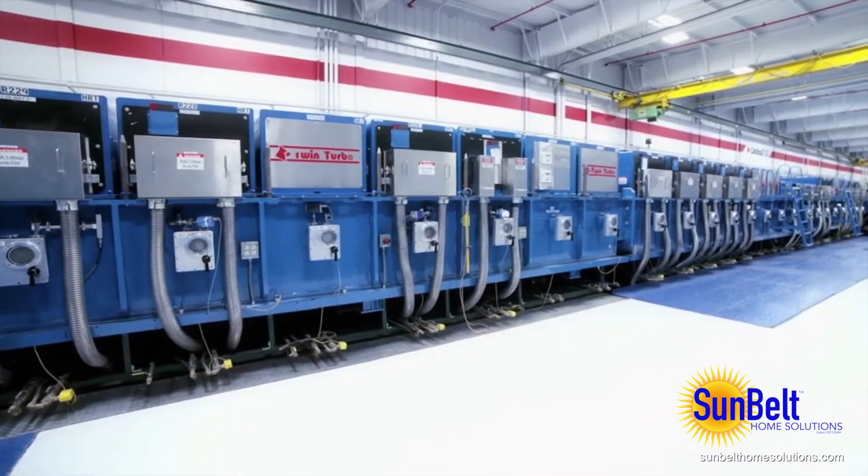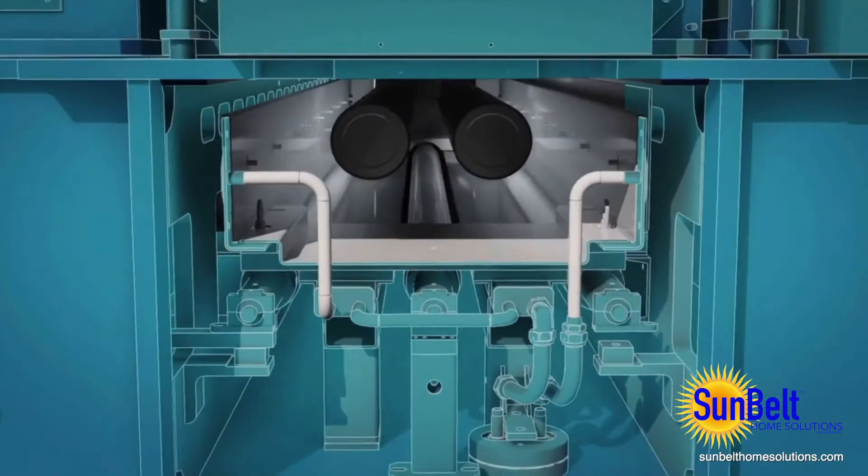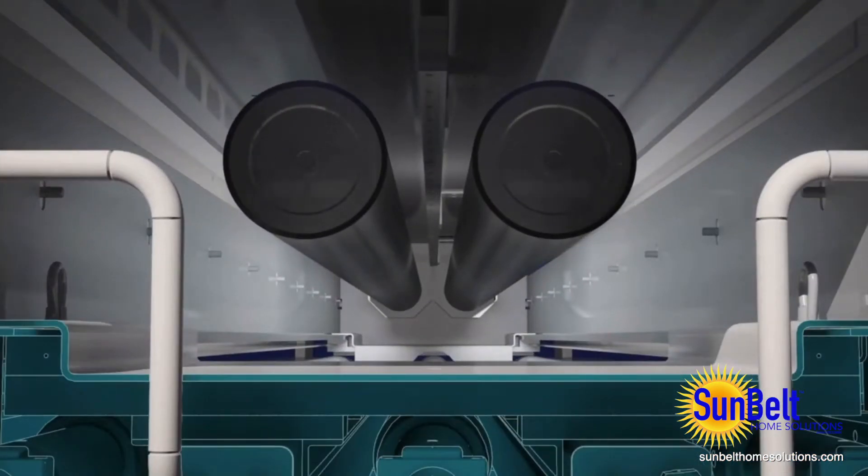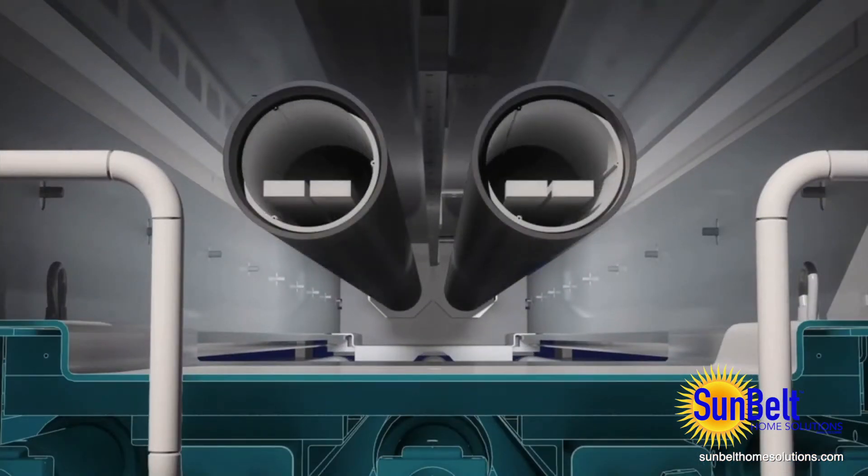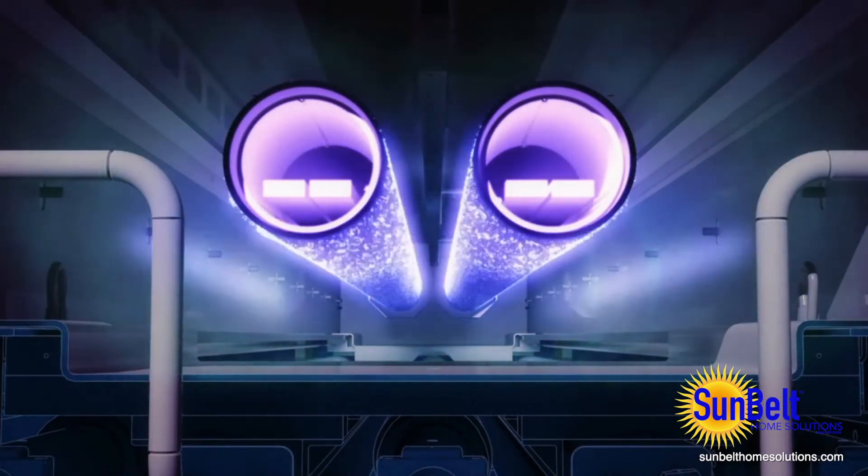Specially formulated coatings are deposited onto the glass in a process called magnetron sputtering. Each cathode chamber has a high voltage magnetron. When activated, it interacts with an inert gas that enters into the chamber, forming a plasma.